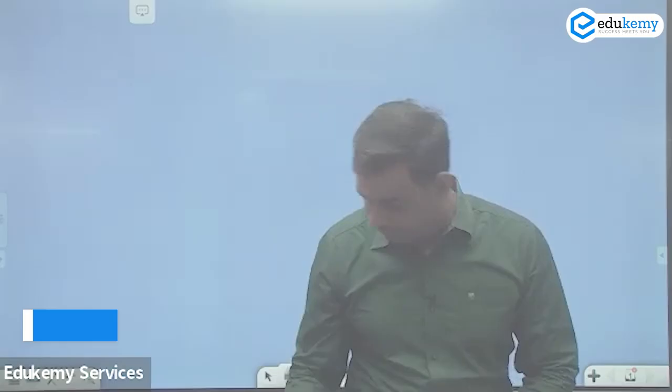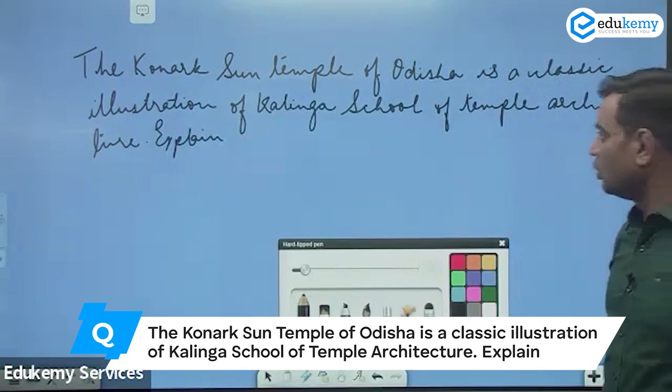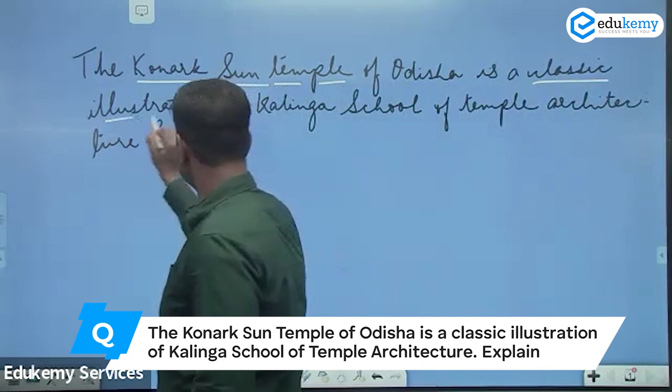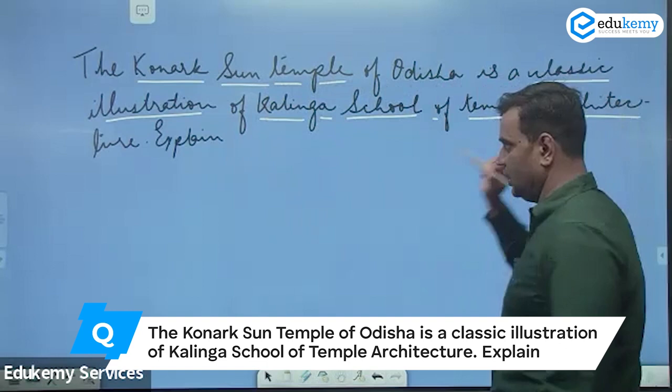The first question to be discussed related to architecture is the Konark Sun Temple of Odisha. The question states that the Konark Sun Temple of Odisha is a classic illustration of the Kalinga School of Temple Architecture. Explain.